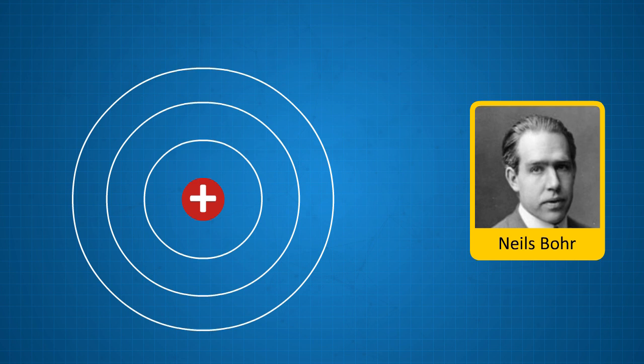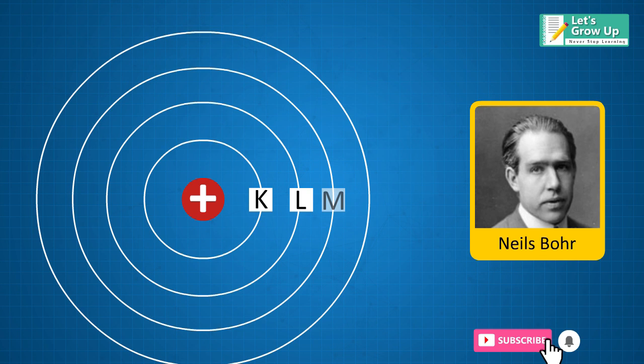This was explained by naming the shells alphabetically from K, L, M, N, and so on. Each shell was subscripted with a periodic number from the nucleus as N equals 1, N equals 2, and so on.